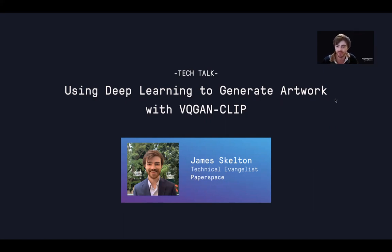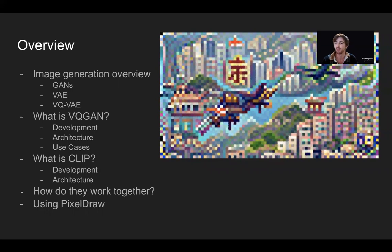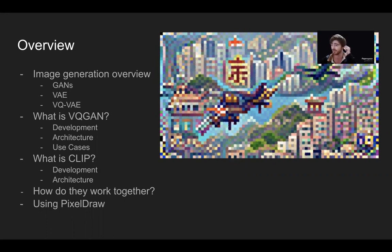Without further ado, let's get started with our presentation today. We're going to be talking about image synthesis, starting with an image generation overview looking at GANs and vector quantized variational autoencoders. Then we'll talk about what a VQGAN actually is — its development, architecture, and use cases — followed by CLIP and its development and underlying architecture. Then we'll look at how you can put them together using the PixRay project and the pixel draw method we're using to create art with VQGAN Clip. On the right is an example — a dragon flying over Hong Kong.